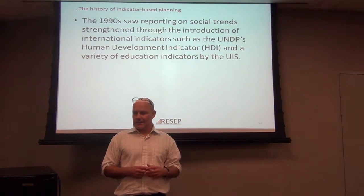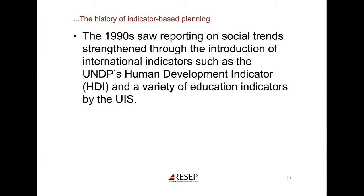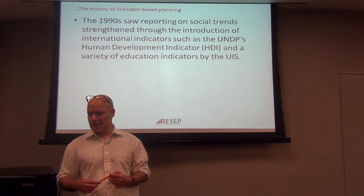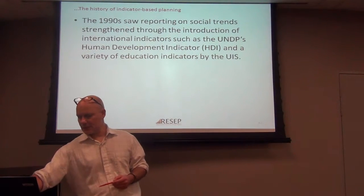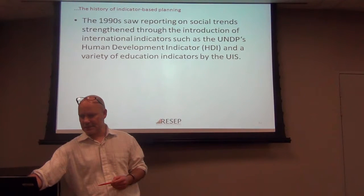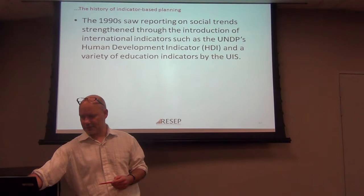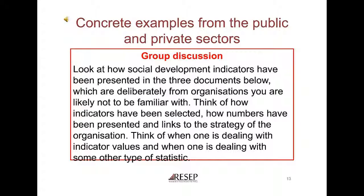The 1990s saw a shift towards more standardized reporting on human capital and education. One had, for instance, the UNDP's Human Development Indicator, whose definitions changed fairly substantially a few years back. If we first look at how indicators have been selected...